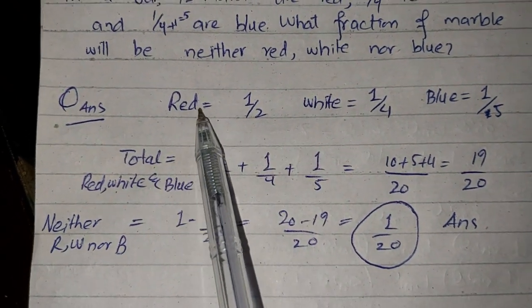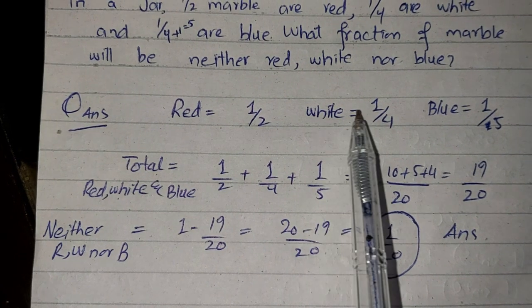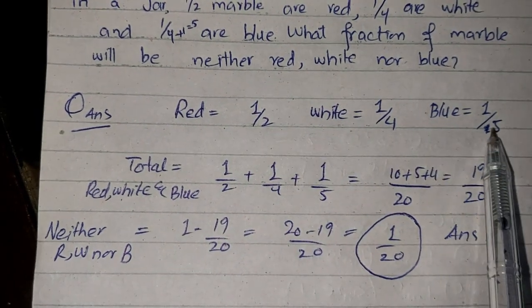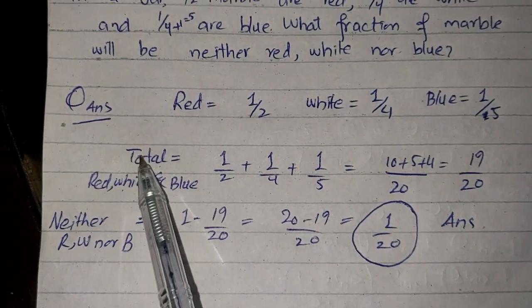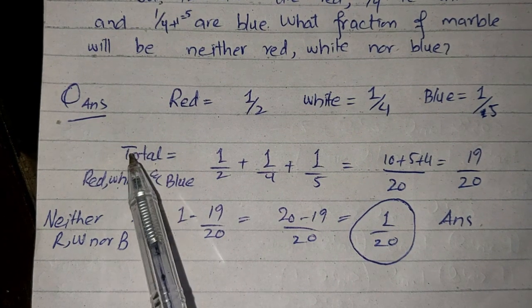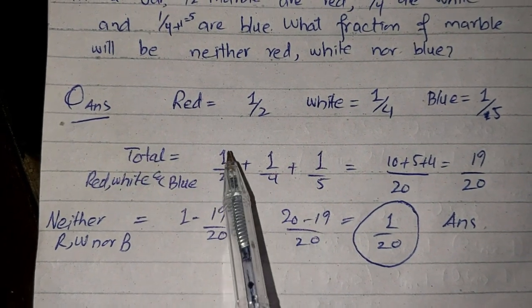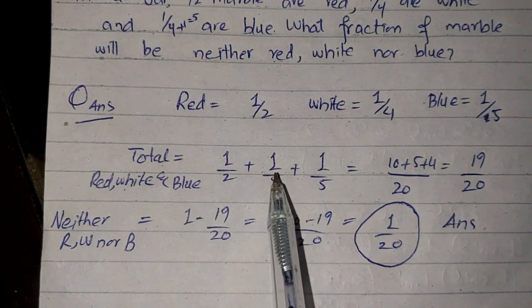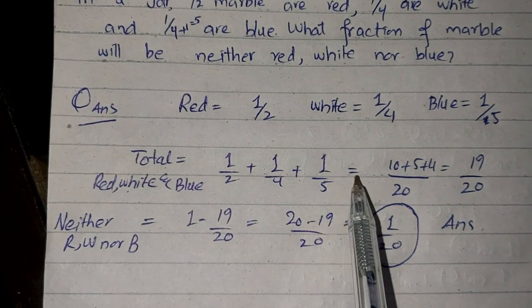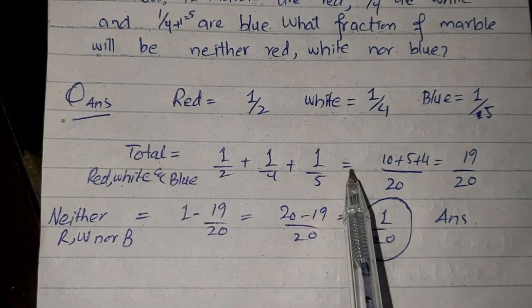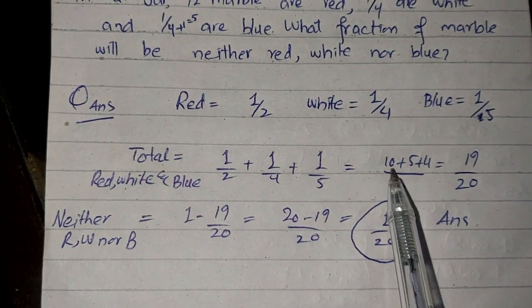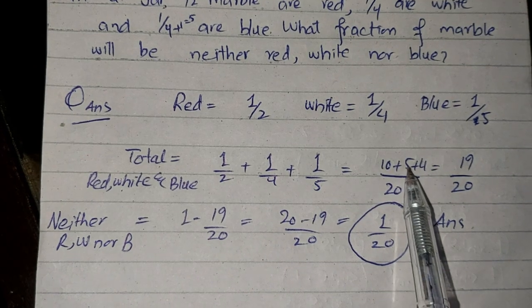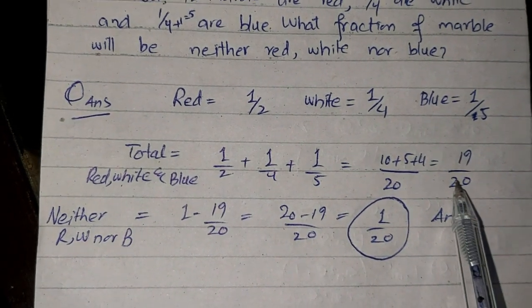Red is one by two, white is one by four and blue is one by five. Total fraction of marble is one by two plus one by four plus one by five. LCM 20: 10 plus five plus four equals 19 by 20.